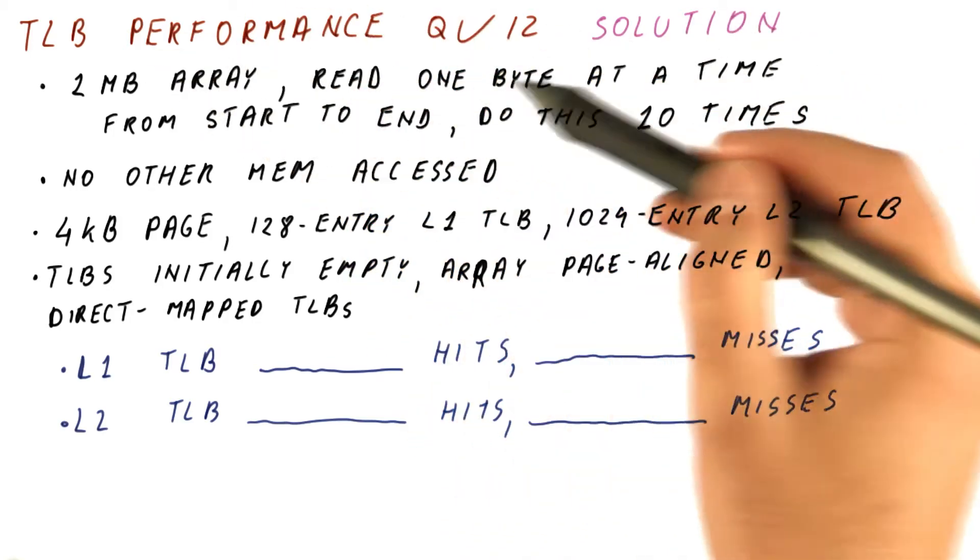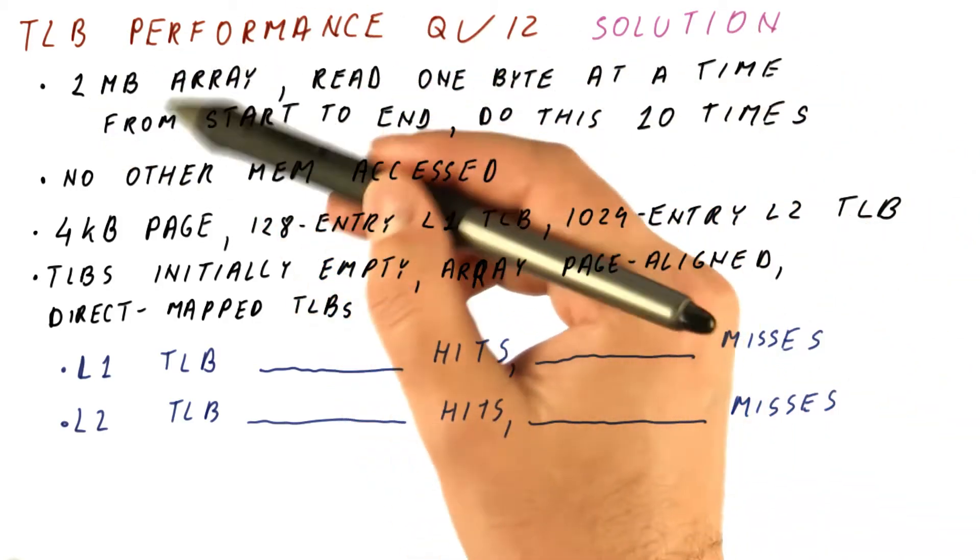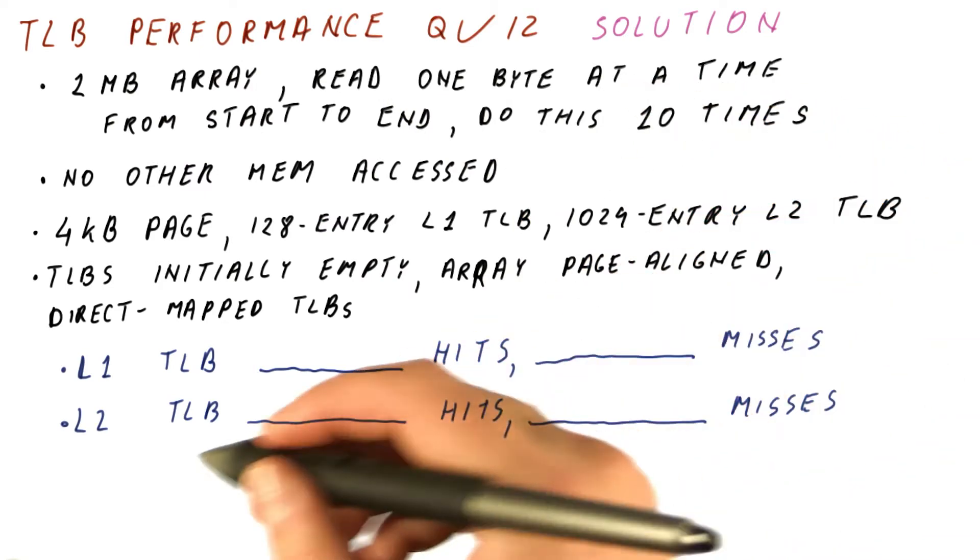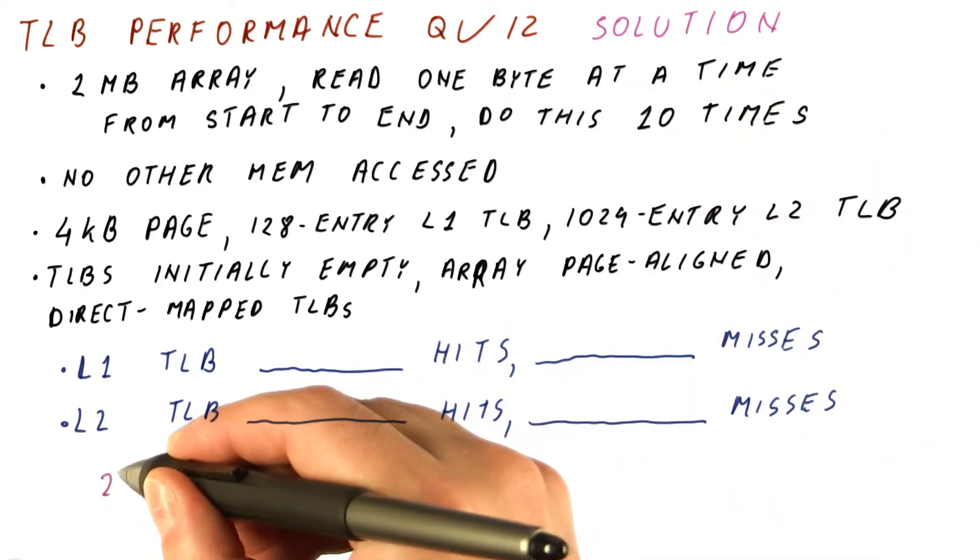Let's discuss the solution to our TLB performance quiz. We have a one megabyte array that we are reading one byte at a time. One megabyte is two to the twentieth bytes.